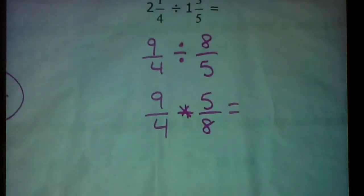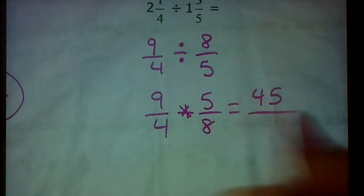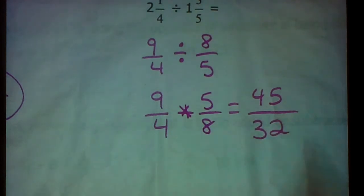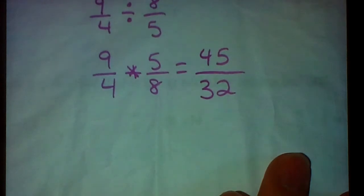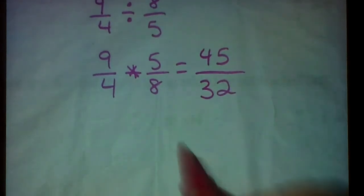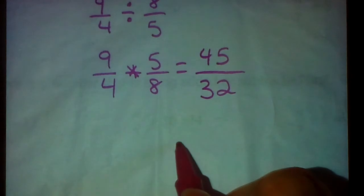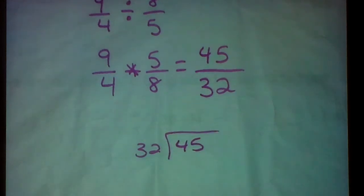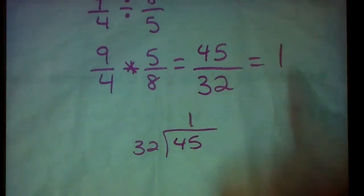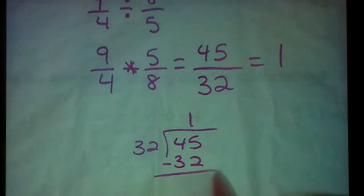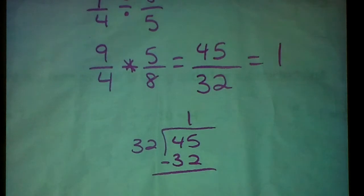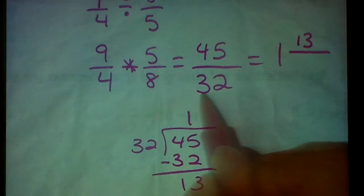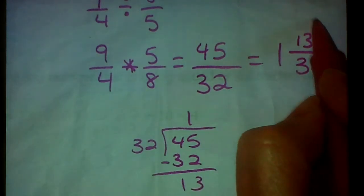Straight across the top. 9 times 5 is 45. 4 times 8 is 32. And look what we got here. We have an improper fraction that we have to change back to a mixed number, just like you do with multiplication. We can change this and do 45 divided by 32. 32 will go into 45 one time. So that's your whole number. And to find our remainder, just do 45 minus 32. And you get 13. So we have a remainder of 13. Remember, keep that denominator. 1 and 13 32nds.